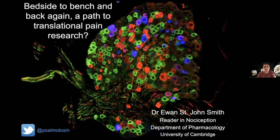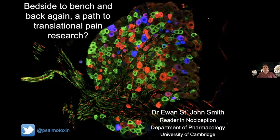Today we are delighted to welcome Dr. Ewan Smith. Ewan kindly stepped in at last minute for Thora Caradottier, who was supposed to give a talk today, and she will now speak on October the 12th — so do mark your diaries. Ewan is a reader in nociception, deputy head of the Department of Pharmacology, and a fellow of Corpus Christi College. His group focuses on understanding the molecular basis of nociception using mice, naked mole rats, and human tissue, as well as investigating the cancer resistance and healthy aging of naked mole rats.